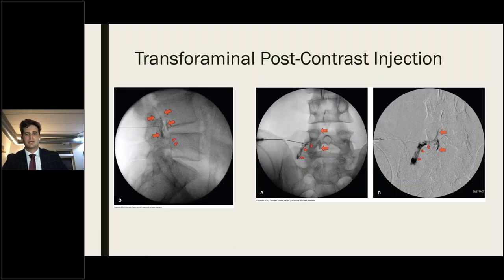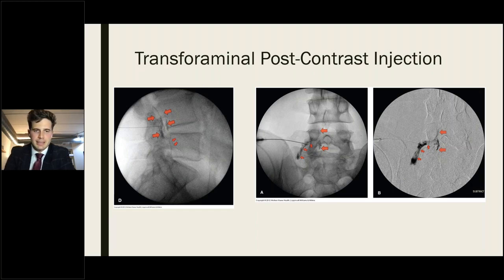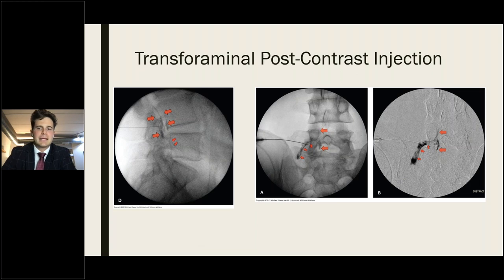Contrast images for transforaminal epidural show contrast within the central epidural space with both posterior and anterior spread. The second image outlines the nerve root with contrast moving from the nerve root into the central epidural space. Digital subtraction imaging is used to assist in identifying vascular uptake of contrast, and contrast spread throughout the nerve root can be seen.